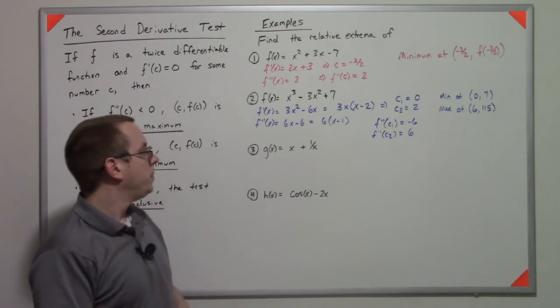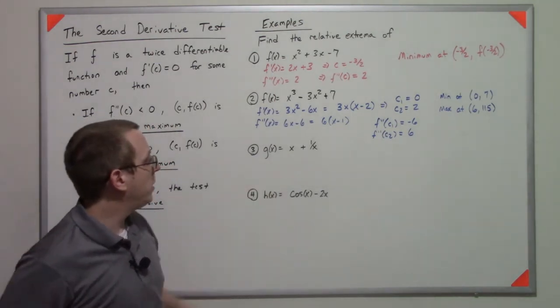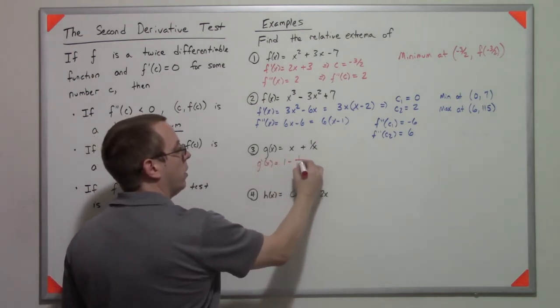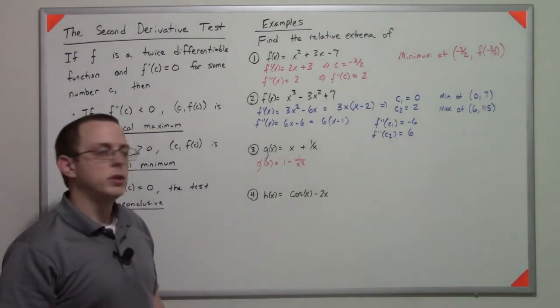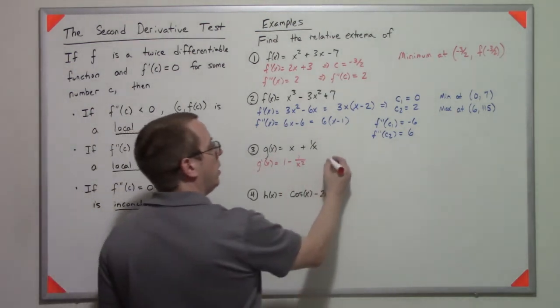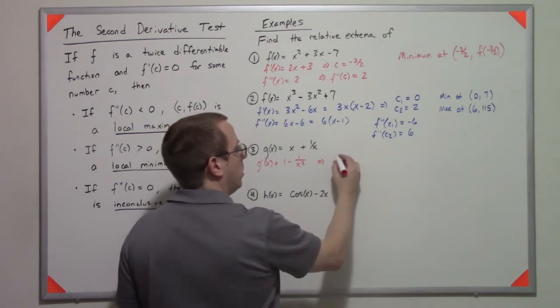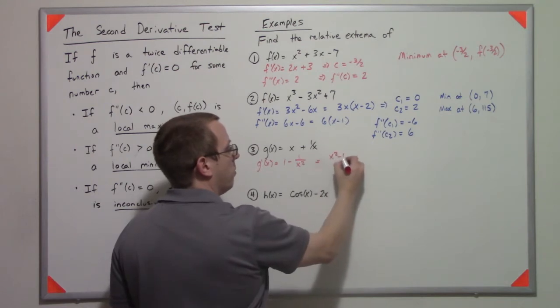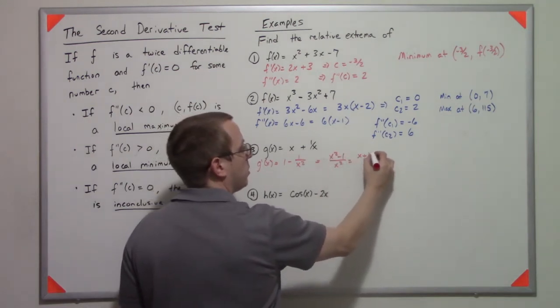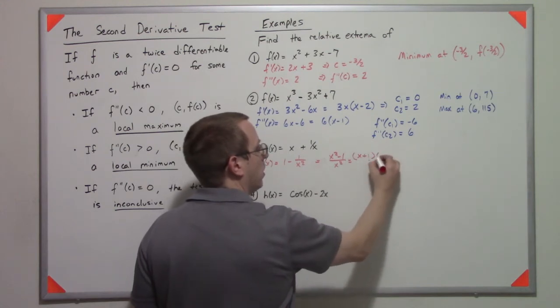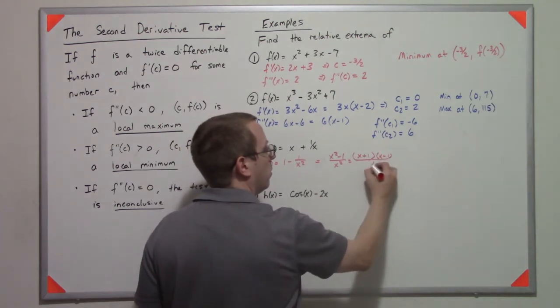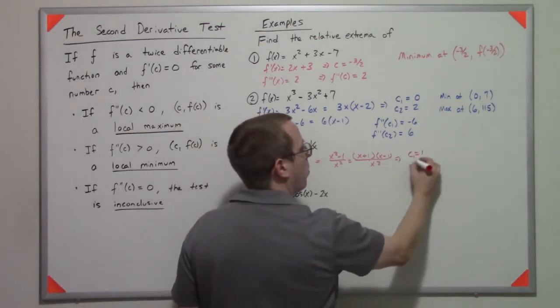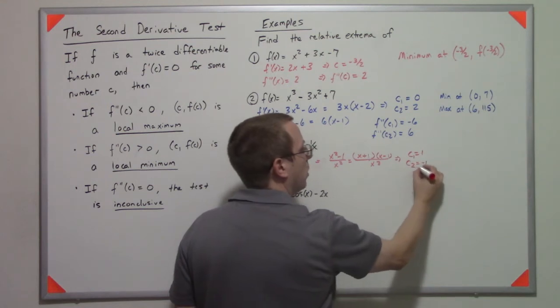Let's keep going. So if I take the derivative of g, I get 1 - 1/x². So solving where this thing is equal to zero, what I could do is I could rewrite that as (x² - 1)/x², which is (x + 1)(x - 1)/x². So that tells me that c₁ is 1, c₂ is negative 1.